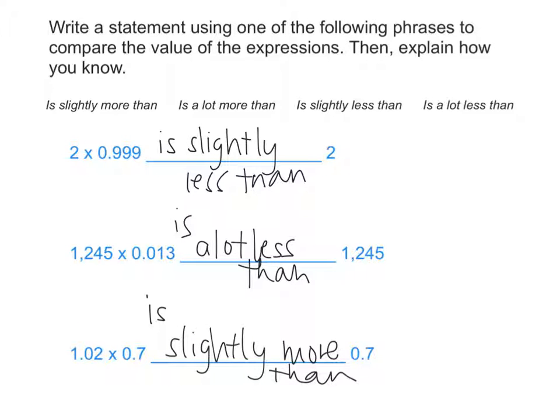So, as you can see, the difference between today's lesson and yesterday's lesson is not only do you need to be able to tell if the scaling factor is making the product bigger or smaller than the other factor, you need to be able to tell if it's slightly more than or a lot more than, or slightly less than, or a lot less than. And you can tell by looking at how close that scaling factor is to 1.